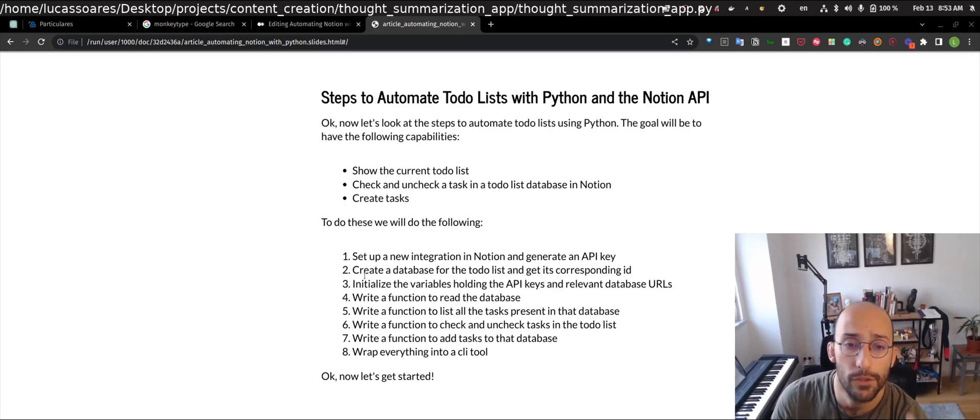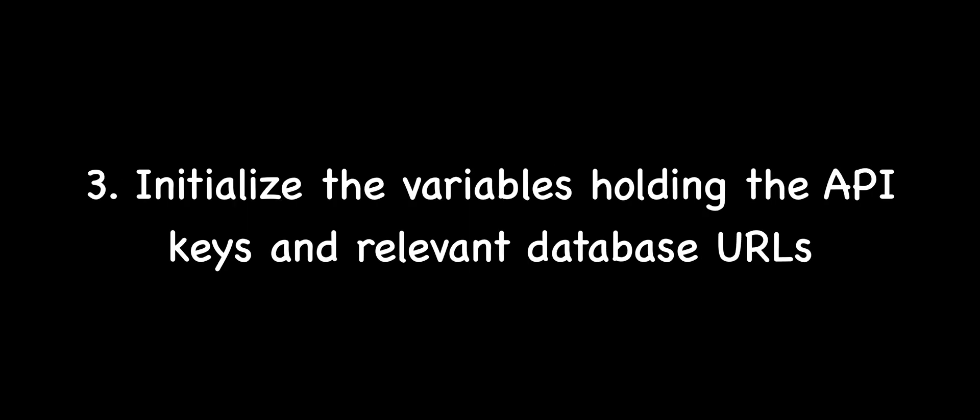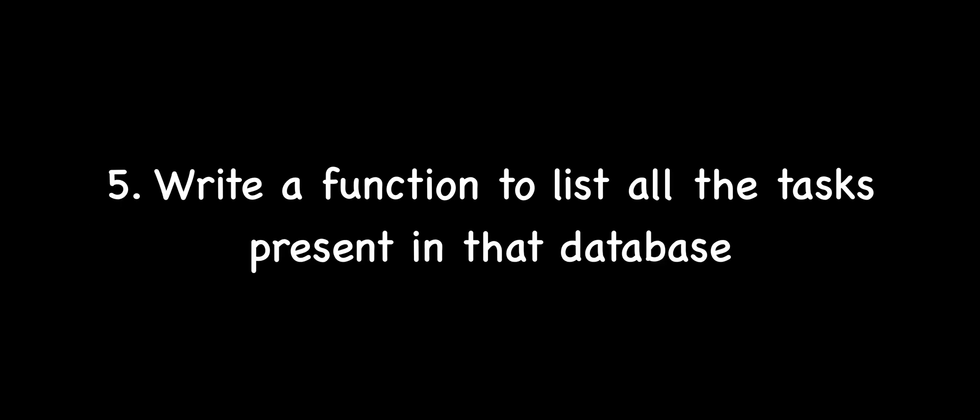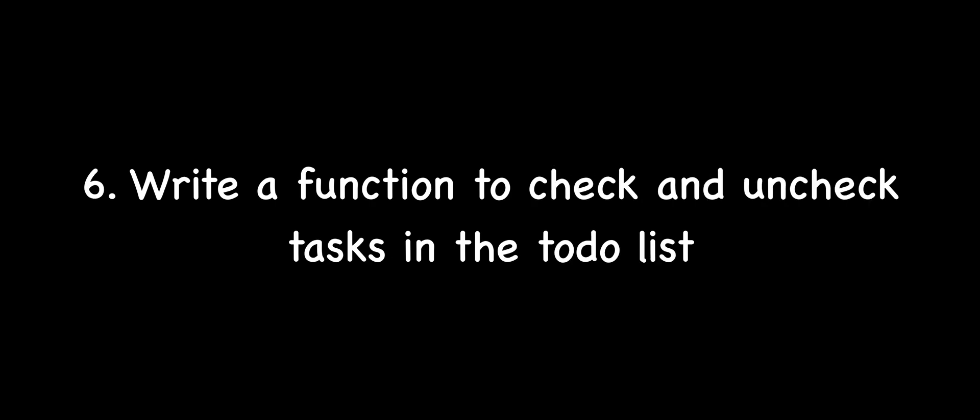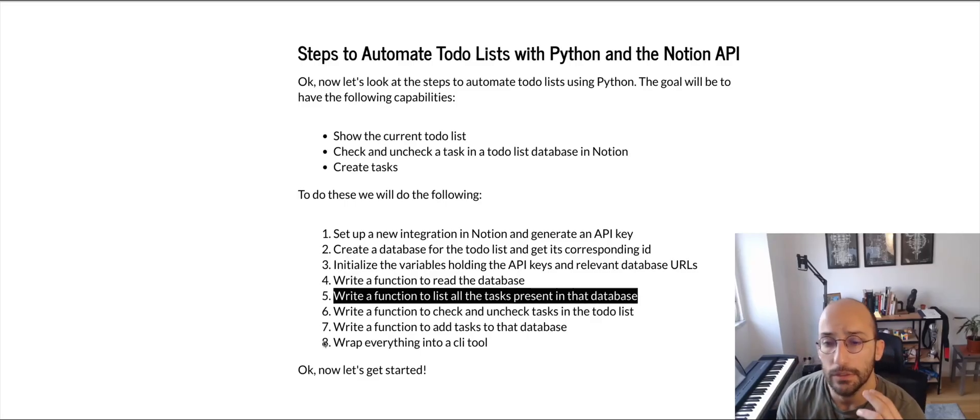To do that we'll follow these steps: first we're going to set up a new integration in Notion and generate an API key, then we're going to create a database for the to-do list and get the corresponding ID, then we'll initialize the variables holding the API keys and the relevant database URLs, write a function to read the database, list all tasks, check and uncheck tasks, add tasks to the database, and finally wrap everything into a command line tool.